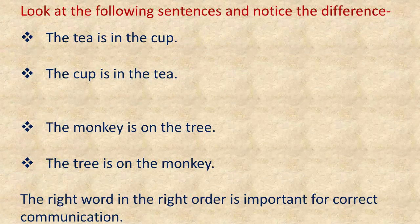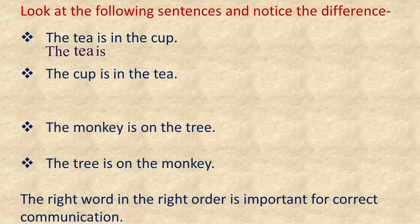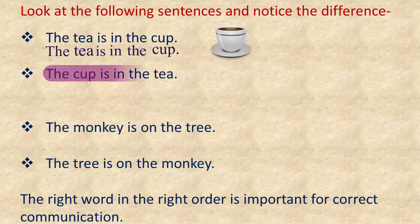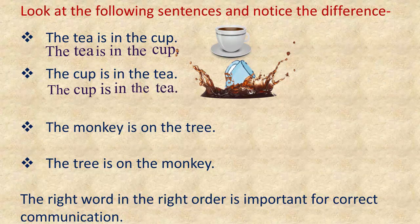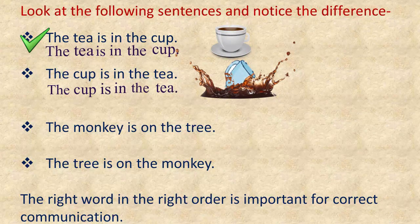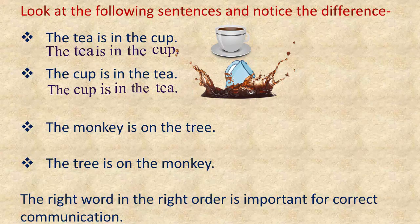Speak these sentences after me and notice the difference: 'The tea is in the cup.' The first sentence is absolutely correct and conveys the correct meaning which the speaker wants to convey. But when we say 'the cup is in the tea,' the meaning of the sentence is changed, and it does not actually convey what the speaker intends to convey.